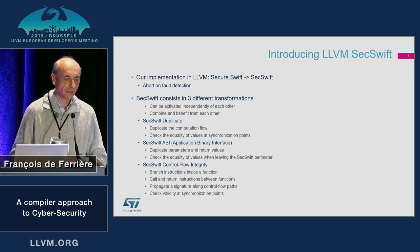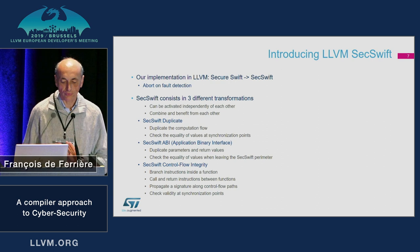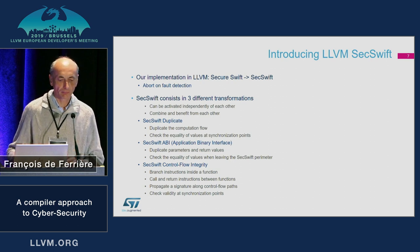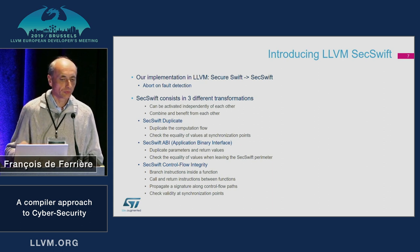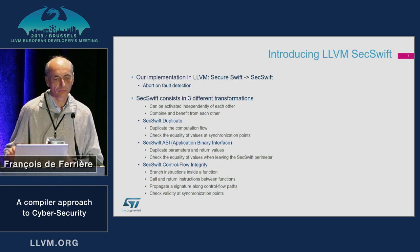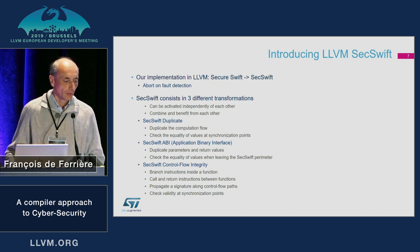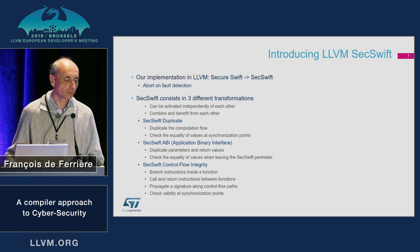We only do error detection — we don't support error recovery. We have separated our implementation into three parts, which can be activated separately and combined with each other: duplication of instructions, modification of the API to duplicate parameters and return values, and the control flow integrity checking part, where we can check the correct execution of branches and also call and return instructions.